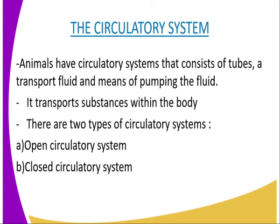A closed circulatory system, on the other hand, is found in vertebrates and also the annelids, where the transport fluid is called blood, which is conveyed in special tubes referred to as blood vessels. Remember that in vertebrates, the transporting fluid is known as blood.